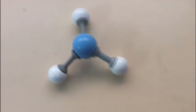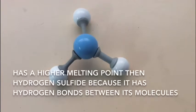Ammonia. Ammonia has a slightly higher melting and boiling point than hydrogen sulfide, because it has slightly stronger intermolecular forces between its molecules. It has hydrogen bonding like water,